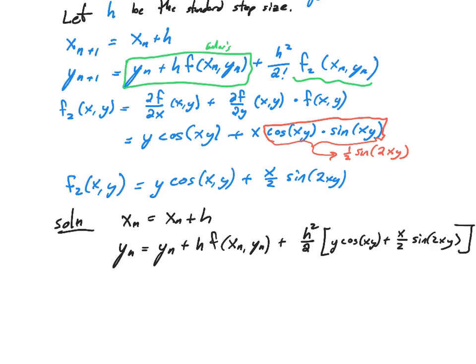Now remember, this Taylor series approach isn't really that efficient. So the next thing we're going to see is how to overcome the problems with the Taylor series by using what's called the Runge-Kutta methods, specifically of order 4.